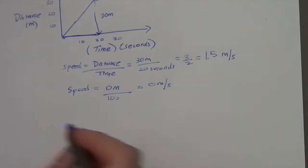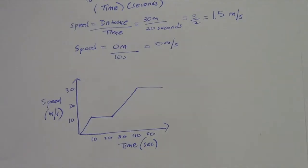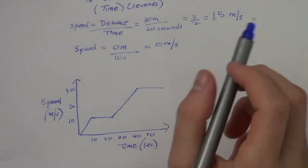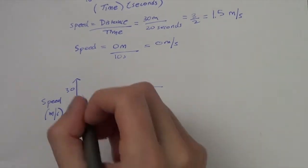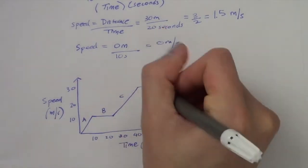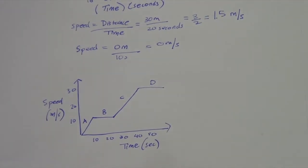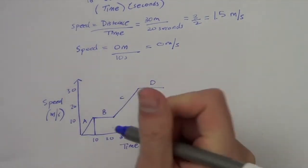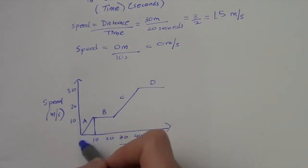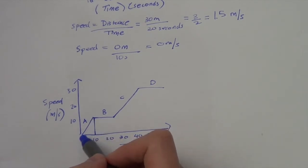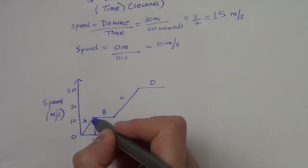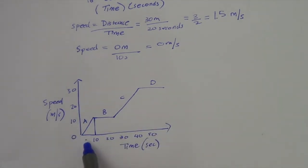Now, what about a speed-time graph? I have drawn several lines — several slopes or gradients. I'm going to label them different letters. Looking at the first one: this car or person goes from 0 metres per second to 10 metres per second, and it does that in 10 seconds.